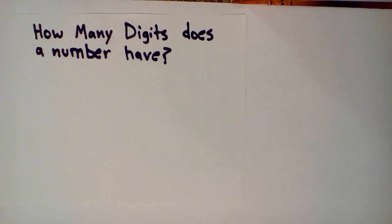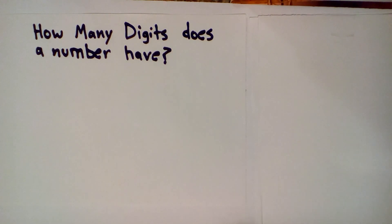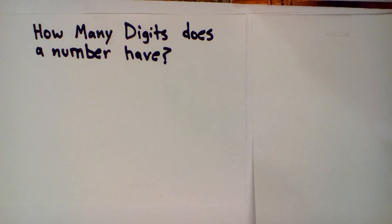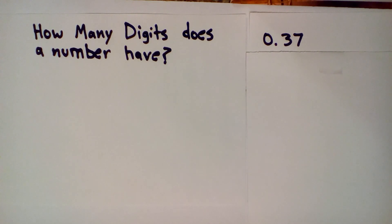Now if you see decimal points, things work a little differently — you only count the numbers to the left of the decimal point. So let's look at these. This number has zero digits — zero digits to the left of the decimal point.